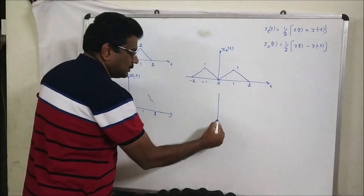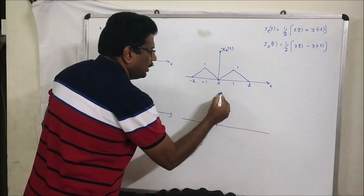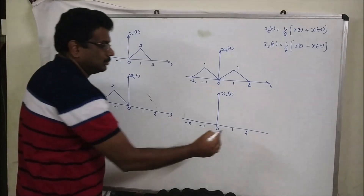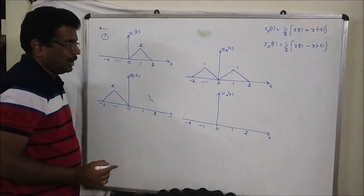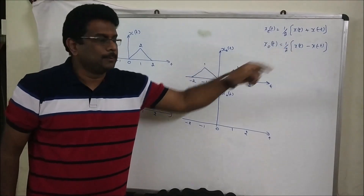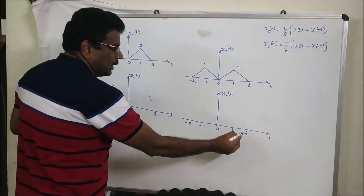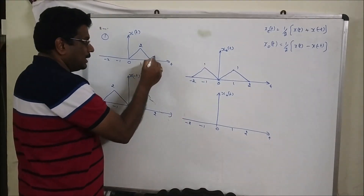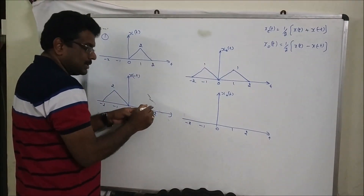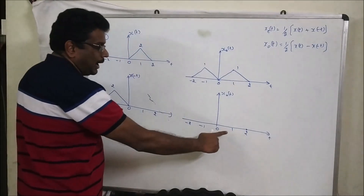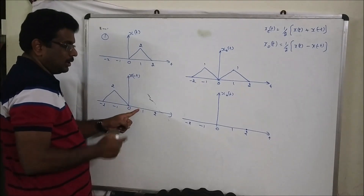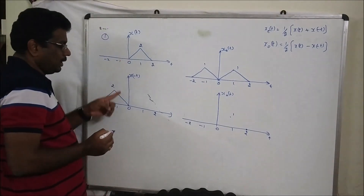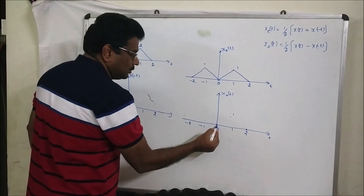Now let us calculate the odd component using the same procedure, but instead of addition we do subtraction. At location 2: amplitude 0, amplitude 0. For the odd signal: 0 minus 0, divided by 2 equals 0. At location 1: value 2, value 0. 2 minus 0 is 2, divided by 2 is 1. At location 0: 0 here, 0 here. 0 minus 0, divided by 2 equals 0.